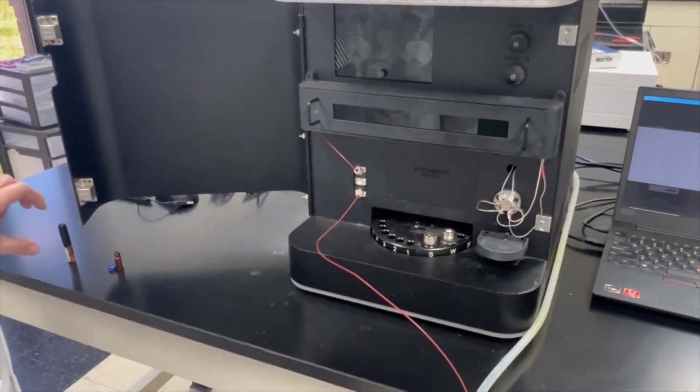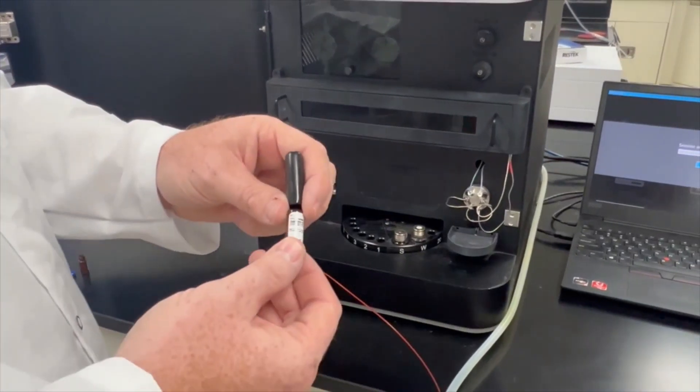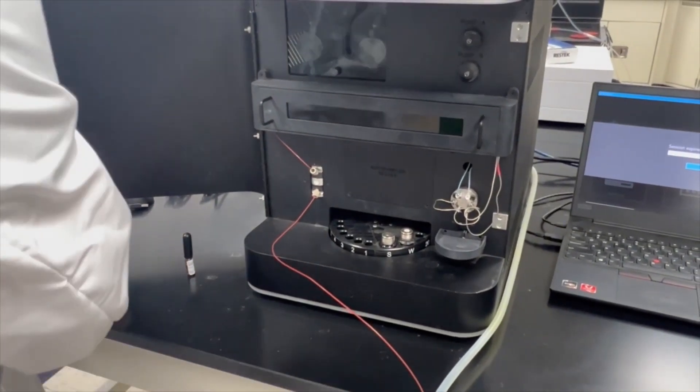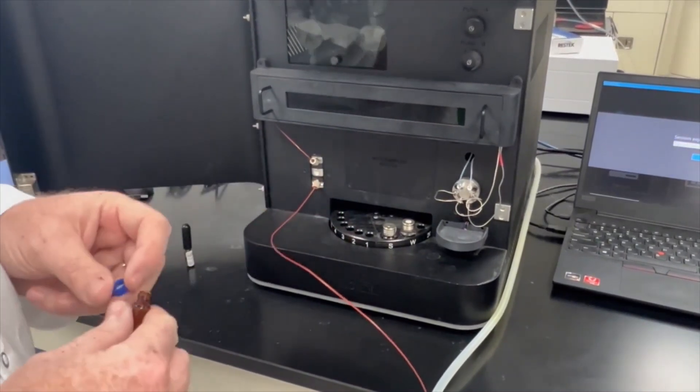And then we're going to take our sample. We're going to crack open our HPLC gradient system test mix and put it in one of our vials. And we're going to put it in vial number one.